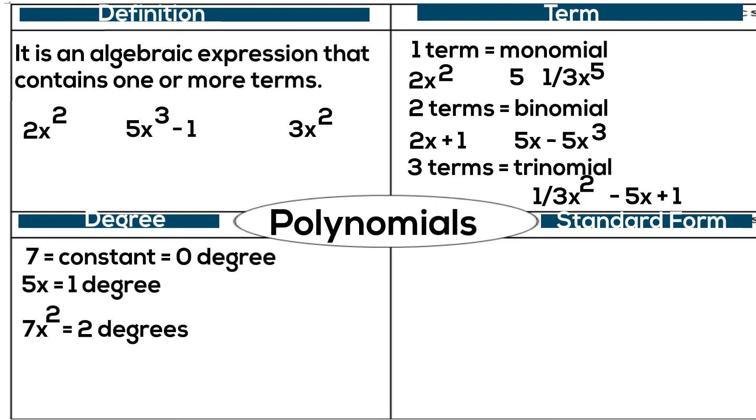The last one we will look at is a third degree. Take a look at 5x cubed minus 2x squared. I don't look at the lower degree, I only look at the larger degree. This is a third degree equation, which is called a cubic.